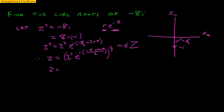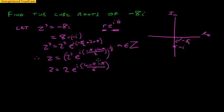z equals the cube root of 2 cubed, which is 2, times e^(i·(4nπ − π)/6). Let's multiply the powers — when you have power over power, you just multiply the powers. And now we've just got to write down all our various solutions. Looking for cube roots, we're hoping to find 3.